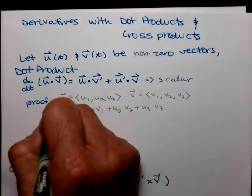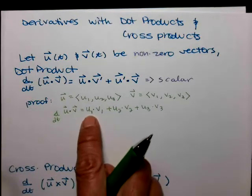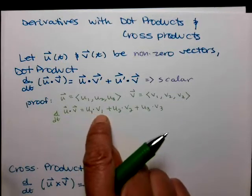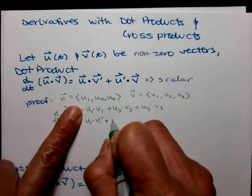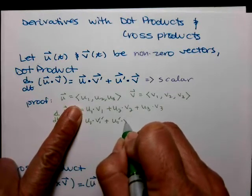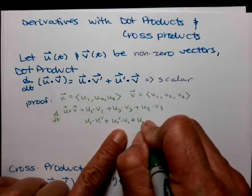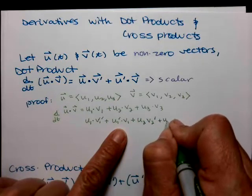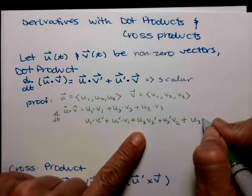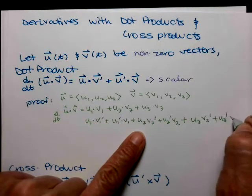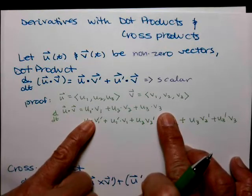Now let's take the derivative of both sides. When we take the derivative of the right side, u1 and v1 are both functions of t, which means we have to apply the product rule on each multiplication. That gives us the first times the derivative of the second plus the derivative of the first times the second, applied to each pair: u1·v1' + u1'·v1, plus u2·v2' + u2'·v2, plus u3·v3' + u3'·v3.